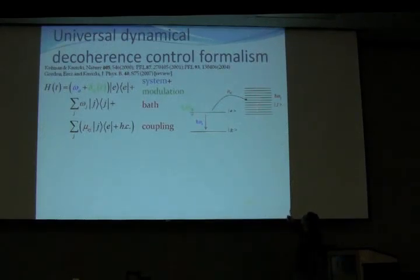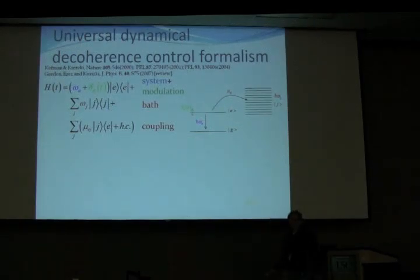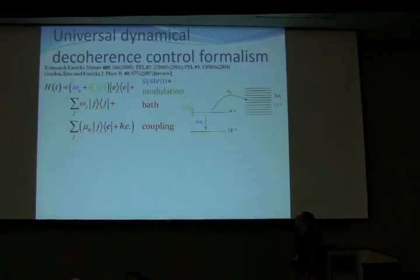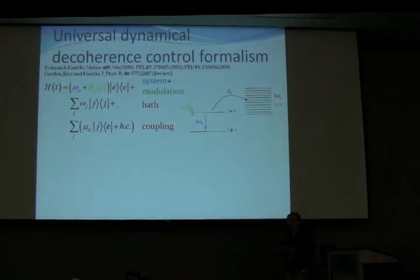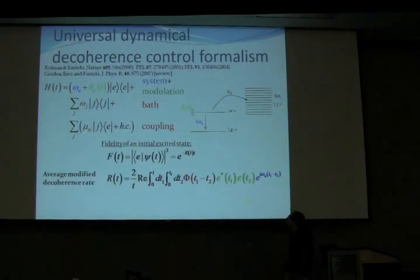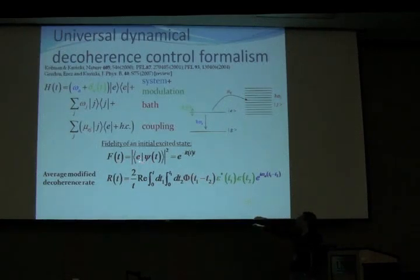Moving to the Hamiltonian formalism — a fairly simple example. We have a two-level system with energy separation omega_A, a bath of zero-temperature harmonic oscillators, and the excited state coupled to the bath modes. This results in decay, known as a damping channel, where the initial excited state goes to the ground state. To control this, we use an AC Stark shift modulation, which results in a time-dependent effective change of the energy separation.